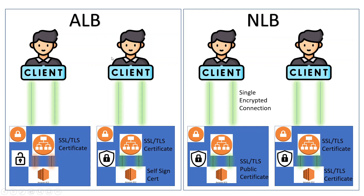Same way for the ALB: in the first scenario, from the client to our ALB, there is a single encrypted connection up till the ALB, and then an unencrypted connection after. In the second scenario, there are two connections — one encrypted connection with the SSL TLS certificate installed on our ALB, and then an encrypted connection from our ALB to EC2 since we have a self-signed certificate installed on our EC2. These are the scenarios we looked at for ALB and NLB.